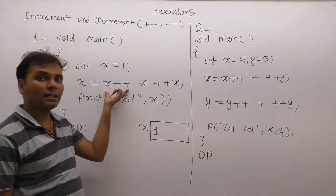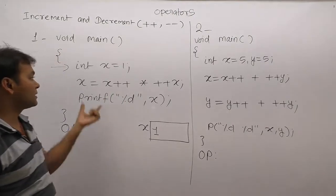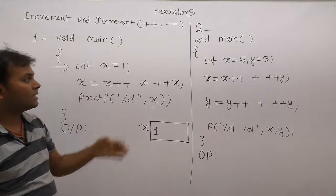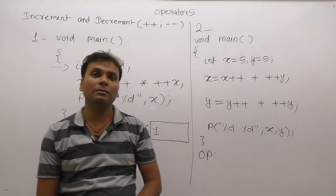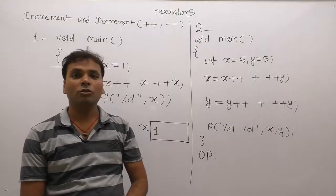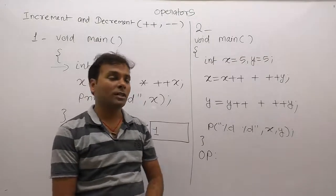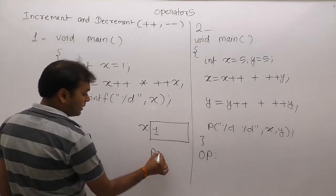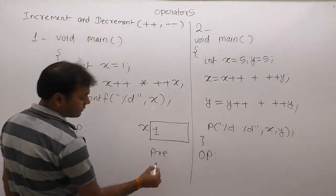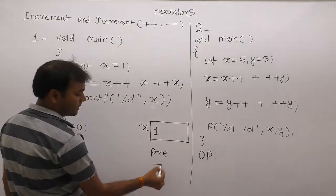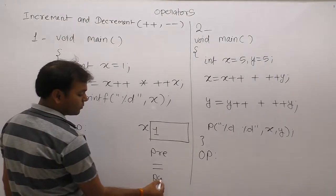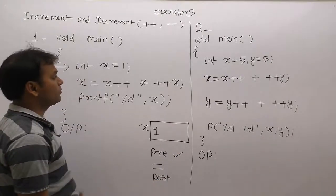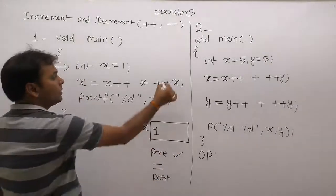Pre, post, and assignment operations are all to be performed with respect to x. According to the assignment rule, we first mark the list or sequence of operations in order: pre first, then assignment, then post. In the pre case, the total pre count is only one time, on variable x.